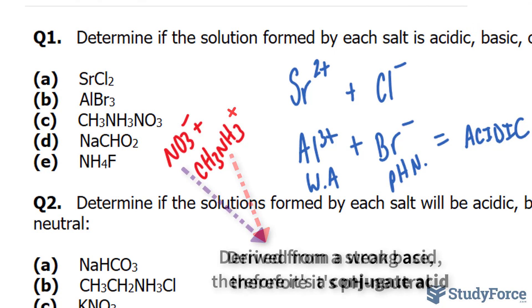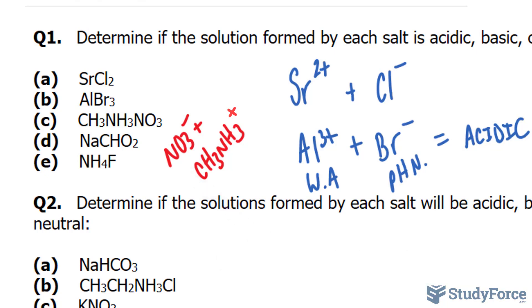The NO3- anion is a conjugate base of a strong acid, HNO3. And therefore, it is pH neutral. Because remember what I said about strong acids, they completely dissociate. Because we have an acid and a pH neutral anion, we can say that the molecule in a solution is acidic. For question D,